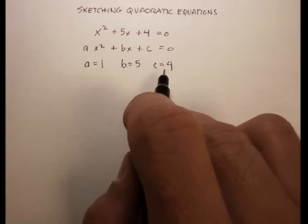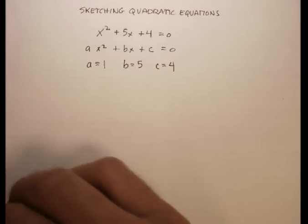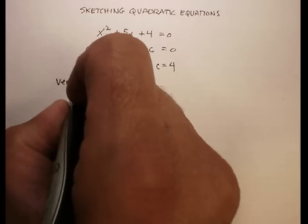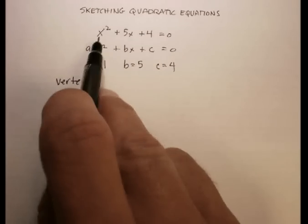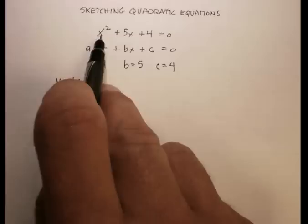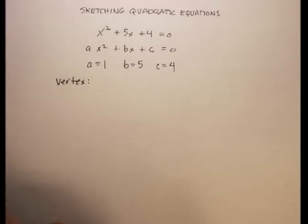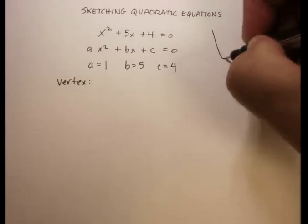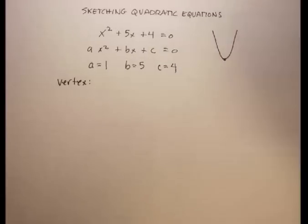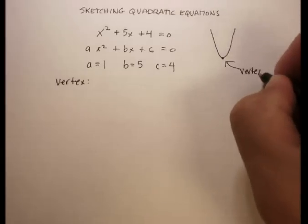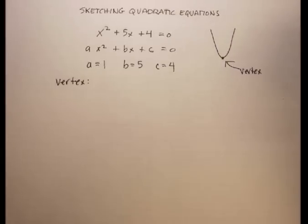Now from the a, the b, and the c, we can get a lot of information. You can actually get what the vertex of your parabola is. Remember, you're always going to produce a parabola in a quadratic equation when you're actually graphing it. The vertex is just the tip of your parabola. It's going to be some kind of a point, some type of an xy.